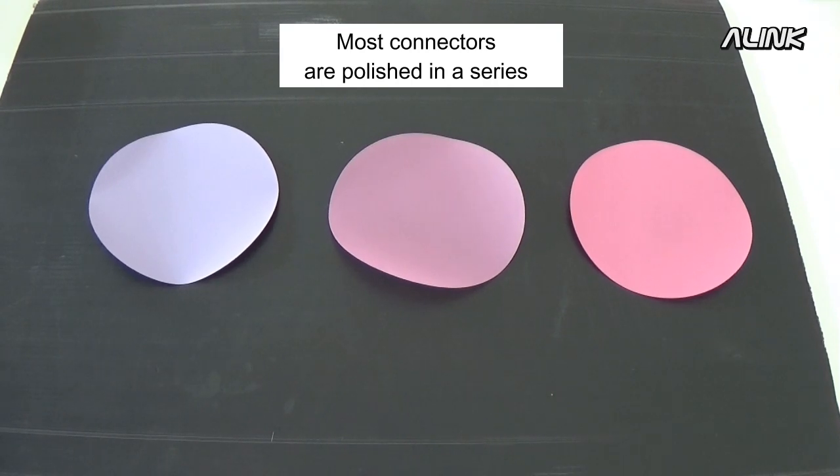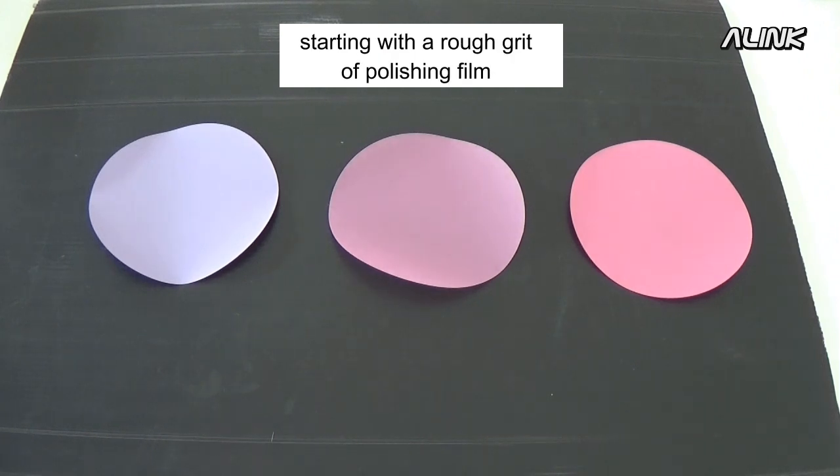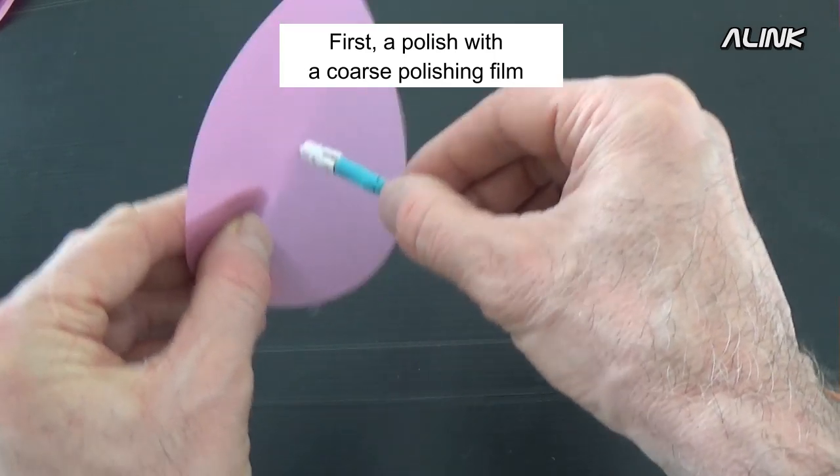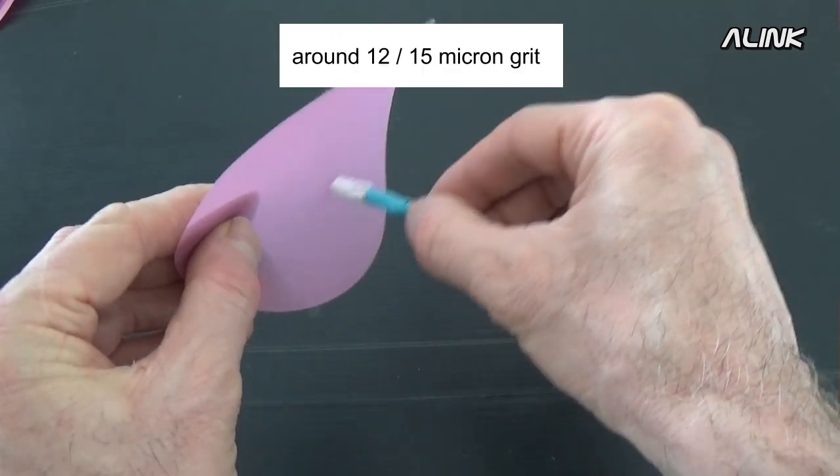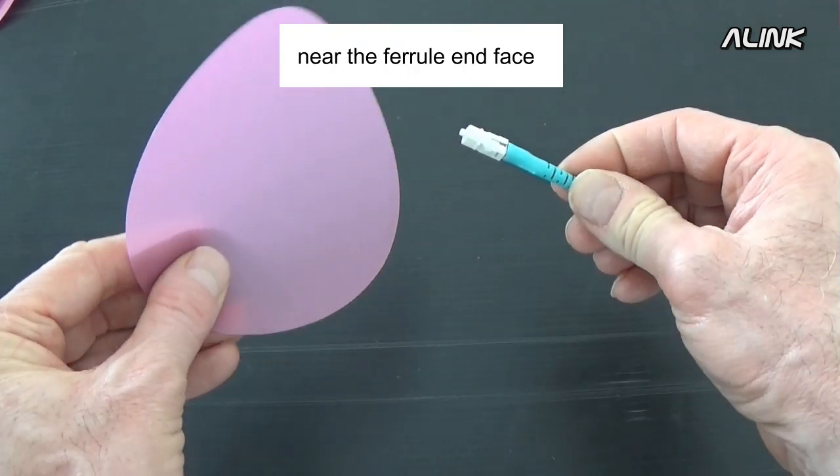Most connectors are polished in a series of three steps, starting with a rough grit of polishing film and moving to a finer grit. First, polish with a coarse polishing film, around 12-15 micron grit, to grind the cleaved fiber down near the ferrule end face.